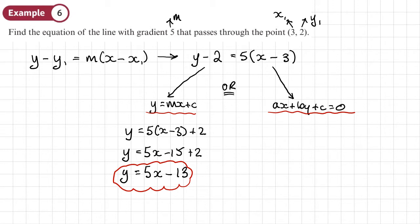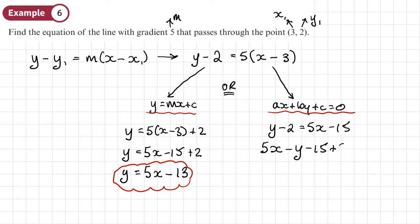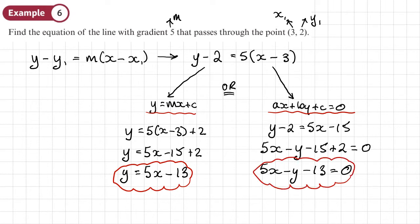For the ax plus by plus c equals 0 form, we start by expanding the brackets to get 5x minus 15, then bring everything to one side. Bringing the y and the 2 over gives 5x minus y minus 13 equals 0. Any multiple of this would be fine. If the question doesn't specify a form, you can leave your answer in the unexpanded form.